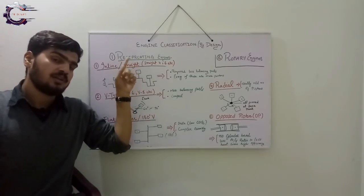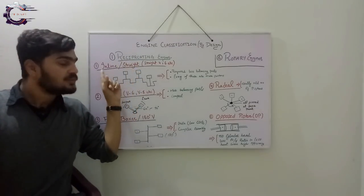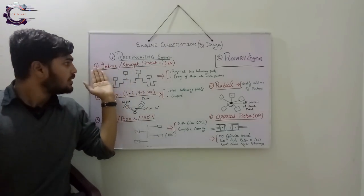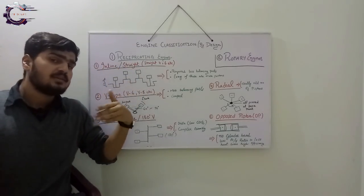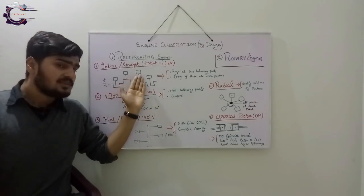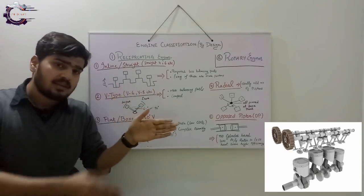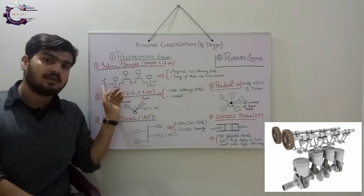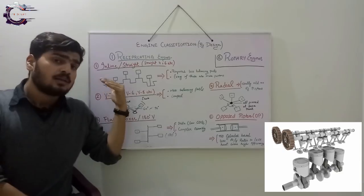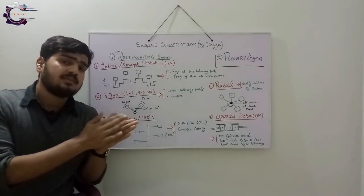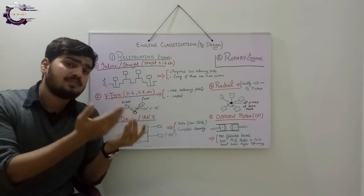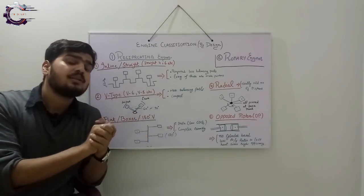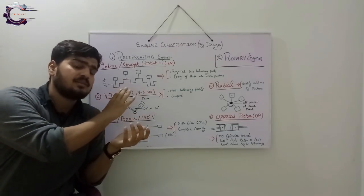Now coming towards the types of the reciprocating engines, the first one in the list is inline or a straight engine. In an inline or straight engine, as the name is referring, all the pistons and the crankshaft are lying in a single plane or a single line, as you can see from this side.